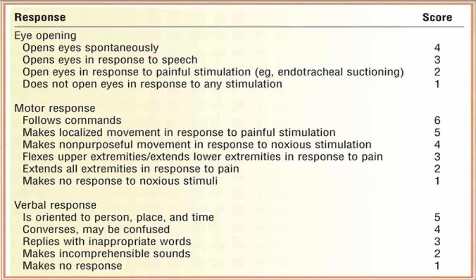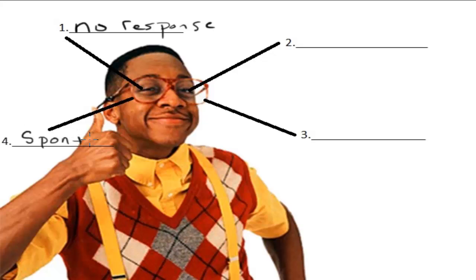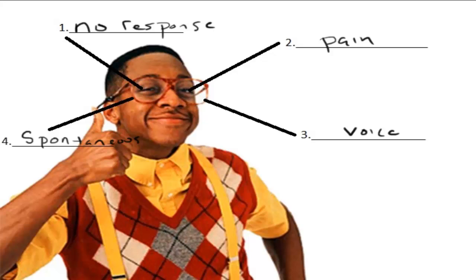First we'd assess the eye-opening category, and we remember the four possible points in that category by picturing a guy with four eyes. It's really only necessary to remember two of the points, because two of them are kind of give-me's: one point for having no response, and four points for being normal, or having spontaneous eye-opening. If not that, the next best thing is opening your eyes to voice — three points. If not that, opening your eyes to pain — two points. And if you don't get that, no response gets one point, which is the worst score in the eye section.